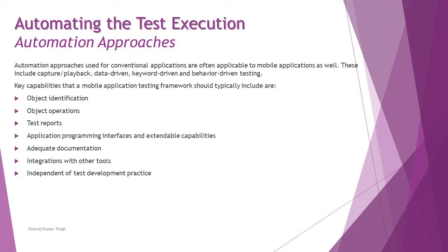Talking about the key capabilities that a mobile application testing framework should typically include: mobile is a different platform from a desktop or ordinary web-based application, so there should be specific capabilities included when creating these frameworks. These include object identification — since objects are different from ordinary applications — object operations, which may differ because of the touch interface, orientation, connectivity type response, and more. Test reports generated should also be included within the framework. Application programming interfaces and extendable capabilities — APIs are different for mobile, so you need to interact with mobile-based APIs working at the back end.